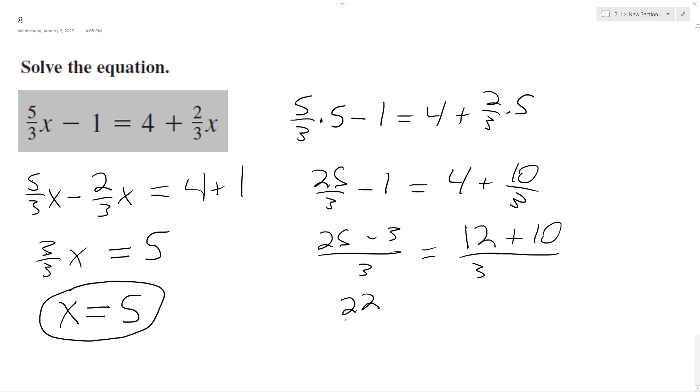25 minus 3 equals 22/3, and 12 plus 10 equals 22/3. And that's it. That proves that x equals 5 is the correct answer.